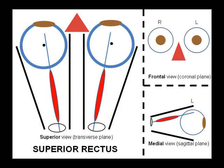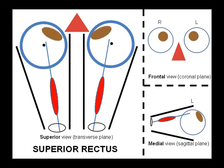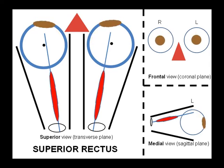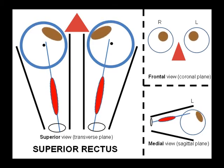Superior rectus, however, has two components to its action. On the superior view, we can see that superior rectus takes its origin from the tendinous ring and inserts in the anterior superior half of the eyeball. The superior rectus tendon takes its course medial to the z-axis, which leads to an element of adduction when superior rectus contracts. Looking at the medial view, superior rectus also inserts superiorly on the eyeball, giving it a component of elevation. The elevation and adduction components work together so that on the frontal view, we can see the eyes moving diagonally superiorly.